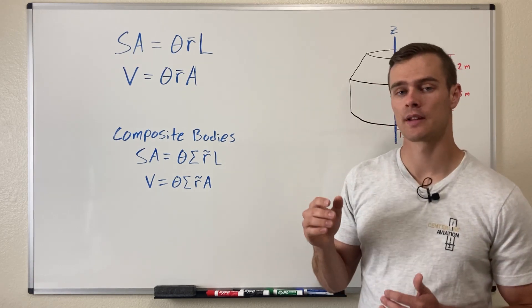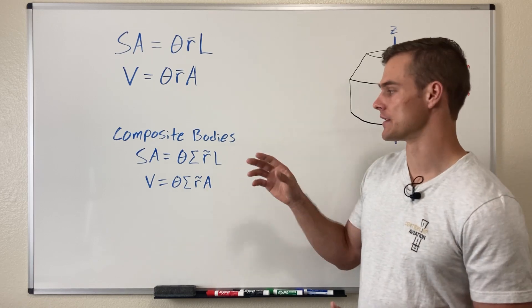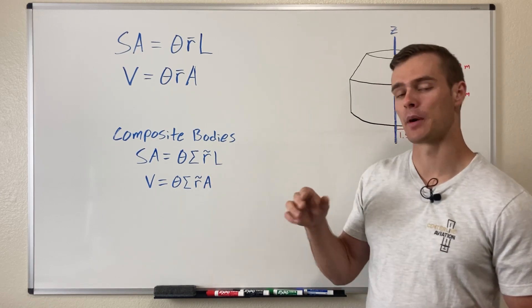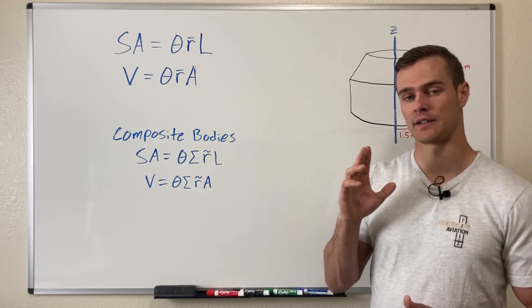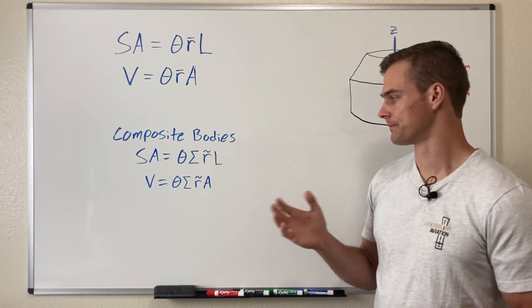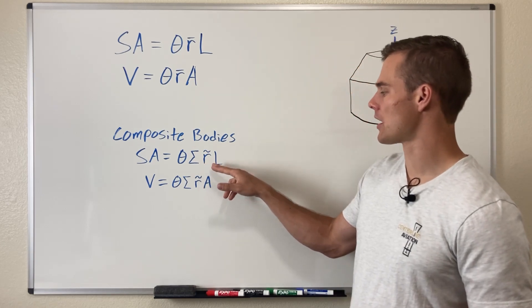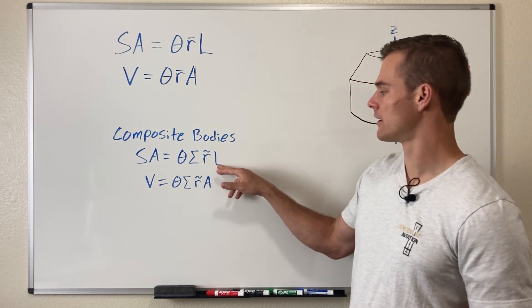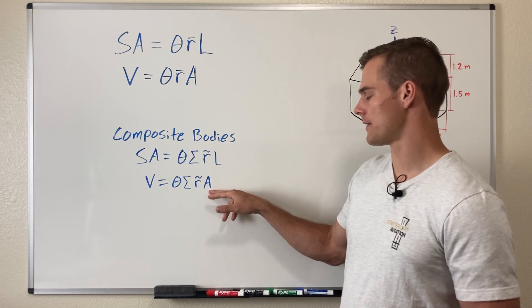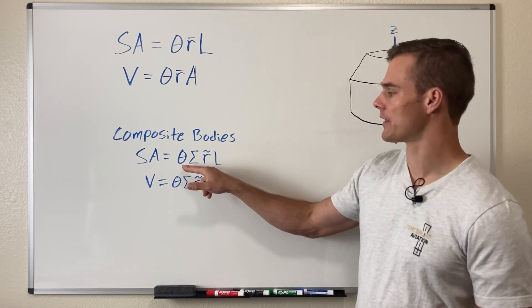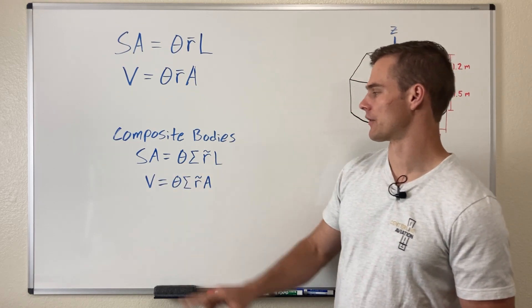You break it up into components, find the centroid, and then R tilde is the perpendicular distance from the axis of rotation to that centroid. You multiply that by that same component's length or area, add them all up with the other components, multiply by theta, and you get the surface area or volume.